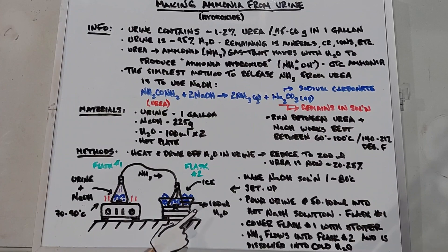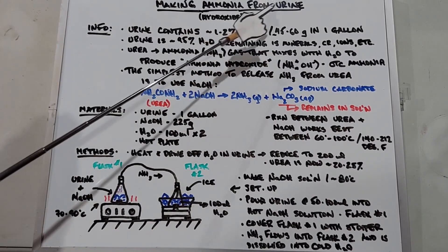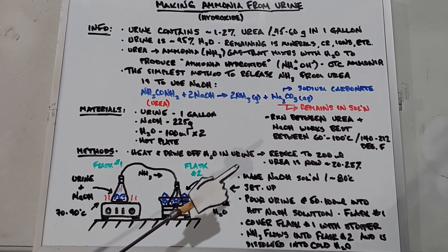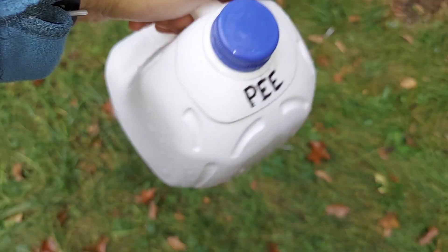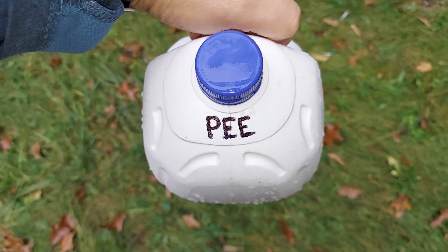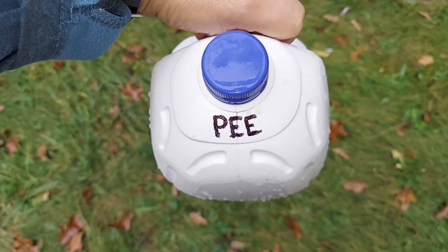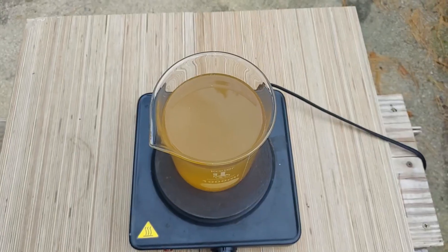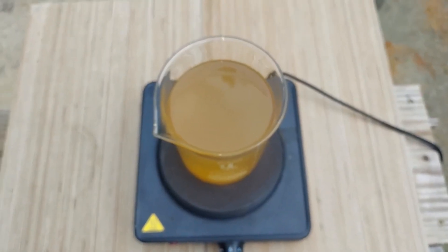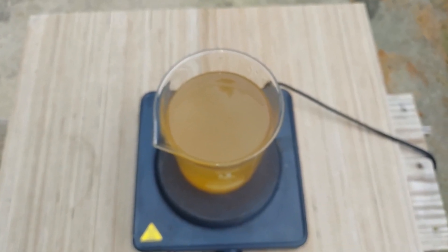I started collecting the urine a bit ago so I'm ready to go. Let's go do it. This is not milk, it's a gallon of my own pee that we're going to use to make some concentrated ammonia. I poured out one liter into this one liter beaker and we're going to heat this until it gets down to maybe 50 to 100 milliliters.